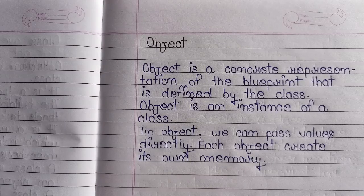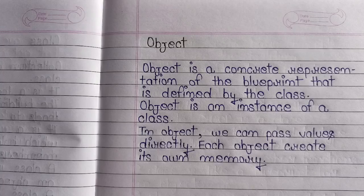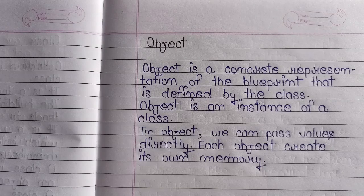What is object? Object is a concrete representation of the blueprint that is defined by the class. Object is an instance of a class. In object, we can pass values directly. Each object creates its own memory.